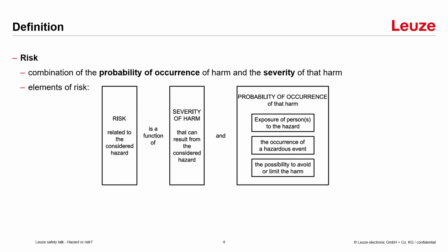Here we find three more definitions. We have the exposure of a person to the hazard — so how often and how long is the person exposed to this hazard? Then we have the occurrence of the hazardous event itself — for example, an explosion which happens only very rarely, or the mechanical hazard, the cutting edge, which is permanently present.